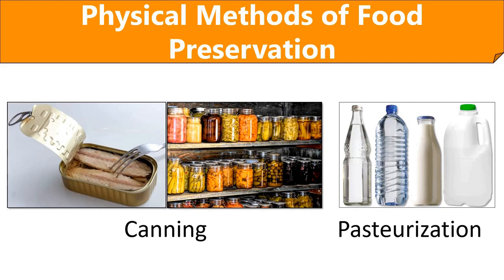Batch or wet pasteurization pasteurizes food at relatively lower temperatures for a long time. Flash pasteurization uses the HTST method, which stands for high temperature short time, and the UHT method, which stands for ultra high temperature. Wet pasteurization works at 145 degrees Fahrenheit for 30 minutes; HTST works at 161 degrees Fahrenheit for 16 seconds; and UHT works at 280 to 300 degrees Fahrenheit for 1 to 2 seconds. Food products like milk, juices, and cheese can be preserved by pasteurization.